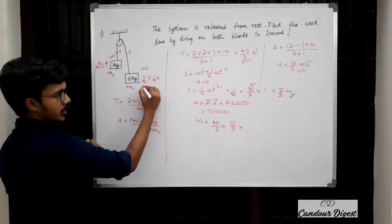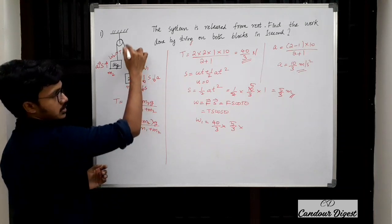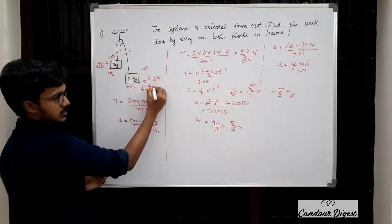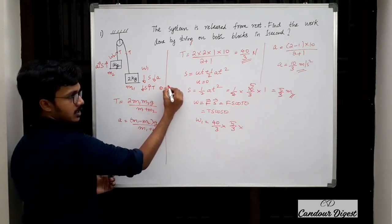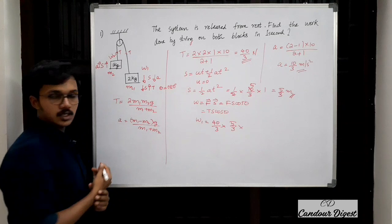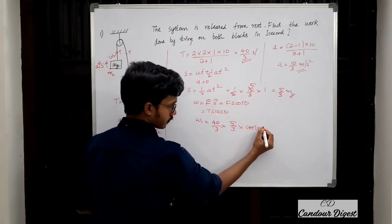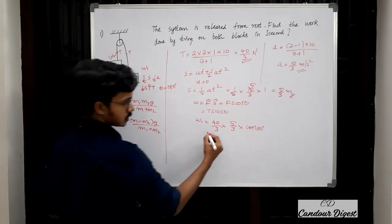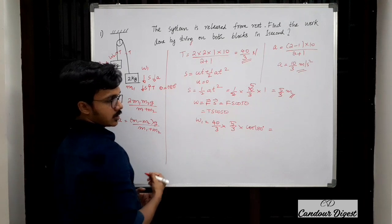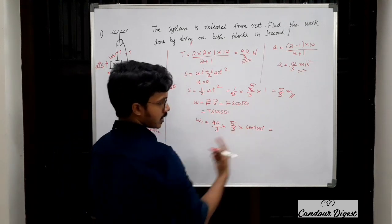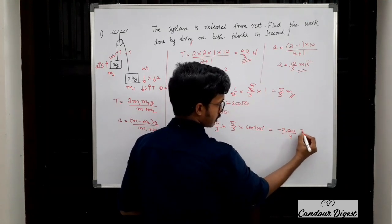Mass M1 is going down, so displacement is downward. Tension is acting vertically upward. The angle between tension and displacement is θ = 180°, so cos 180° = −1. Therefore W1 = (40/3) × (5/3) × (−1) = 200/9 × (−1) = −200/9 joules.